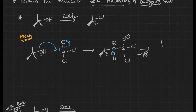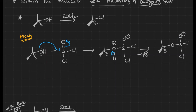After the elimination of the proton, we have oxygen bonded to SO-Cl, and a Cl is there. Oxygen with a negative charge is unstable, because of which it donates electrons. Since chlorine is a good leaving group, it leaves and attacks from the same side. This is how the mechanism takes place.